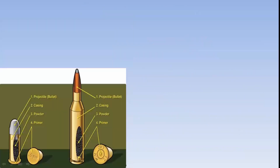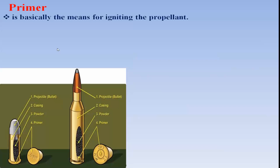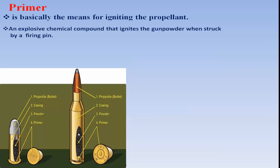What is a primer? Primer is at the base of the cartridge case. It is a means for igniting the propellant. A primer is an explosive chemical compound which ignites the gunpowder when struck by a firing pin. When you pull the trigger, the hammer strikes with the firing pin, crushes the primer, primer ignites, gunpowder burns, gas pressure is produced, and the bullet moves.